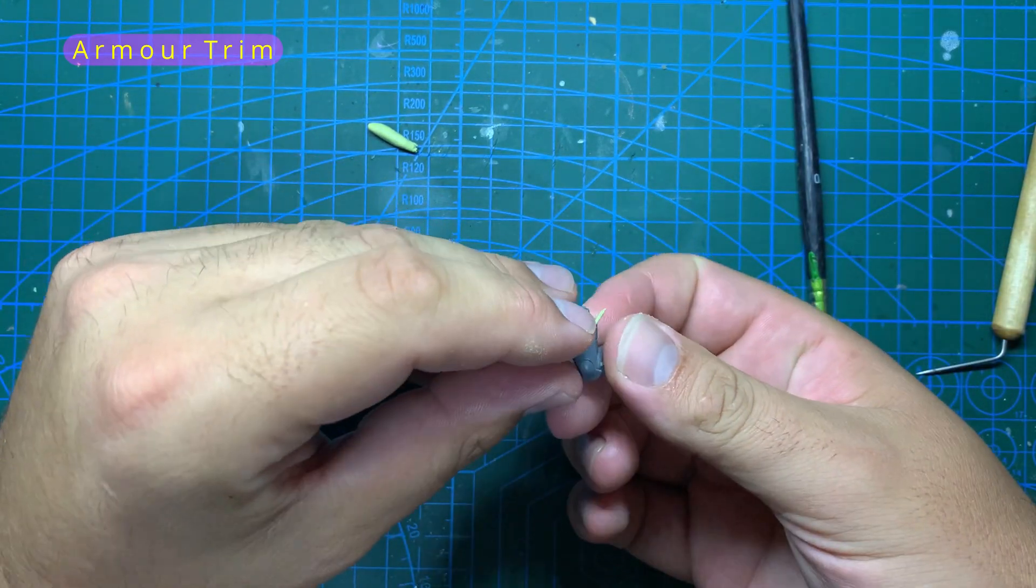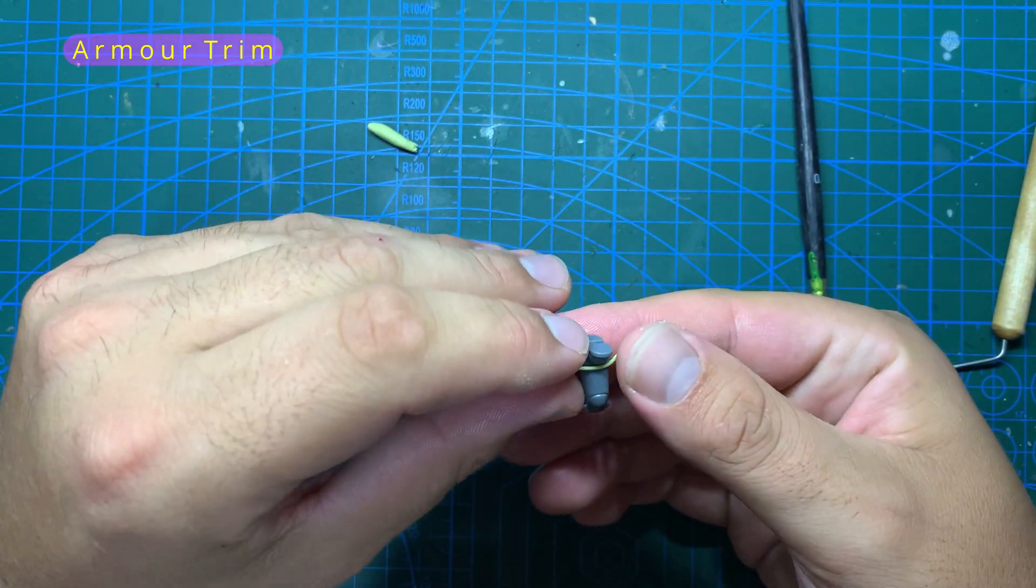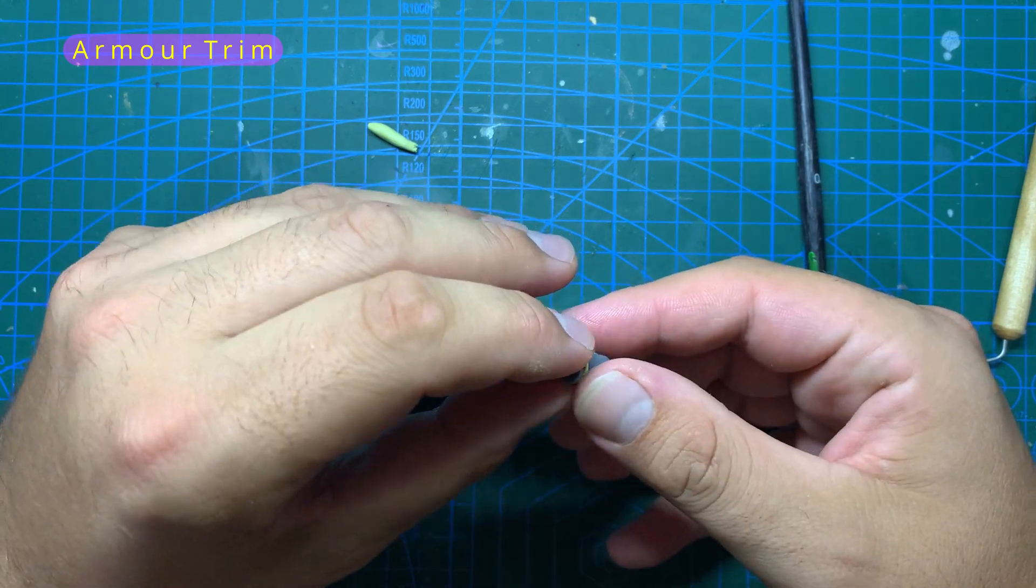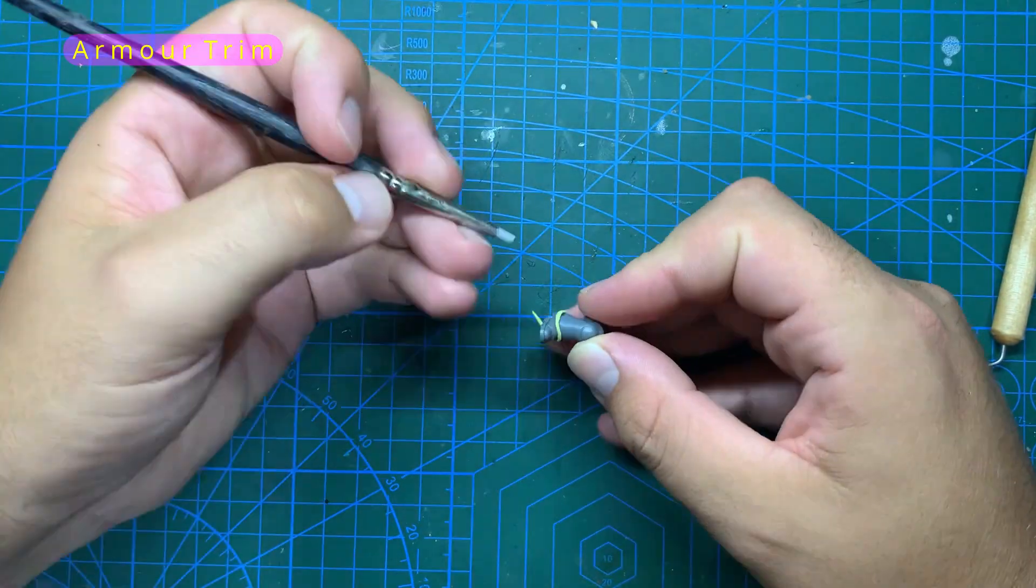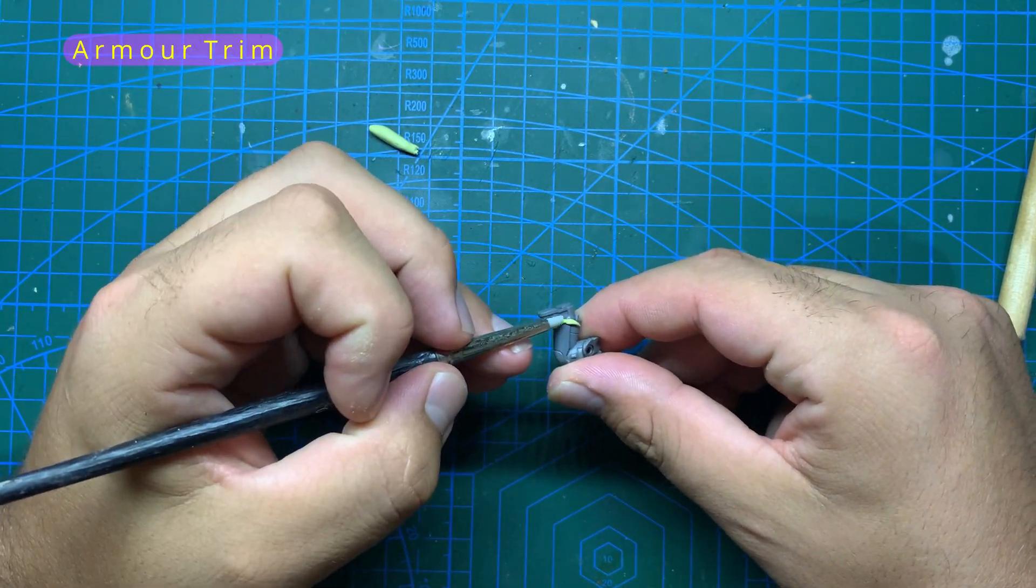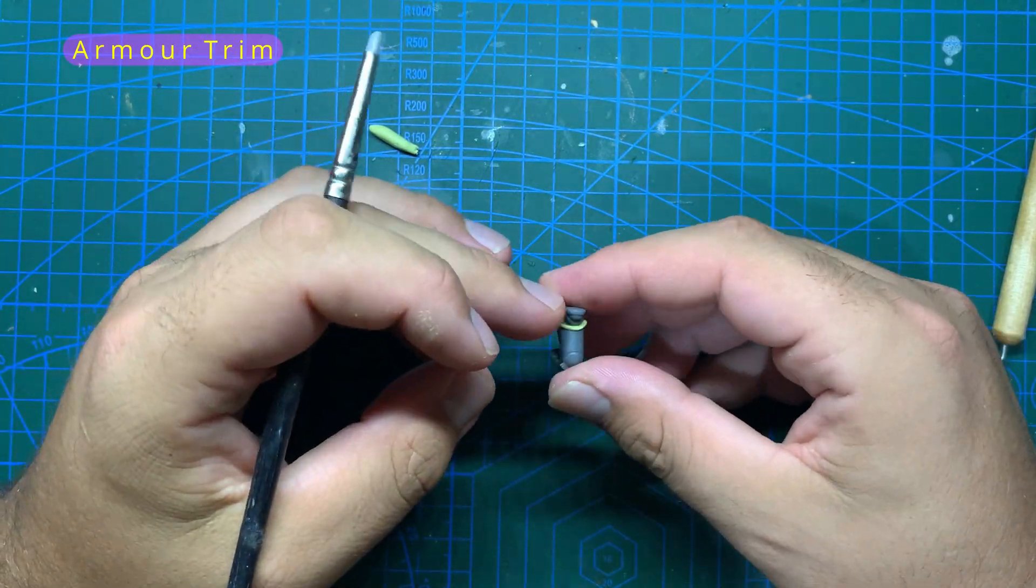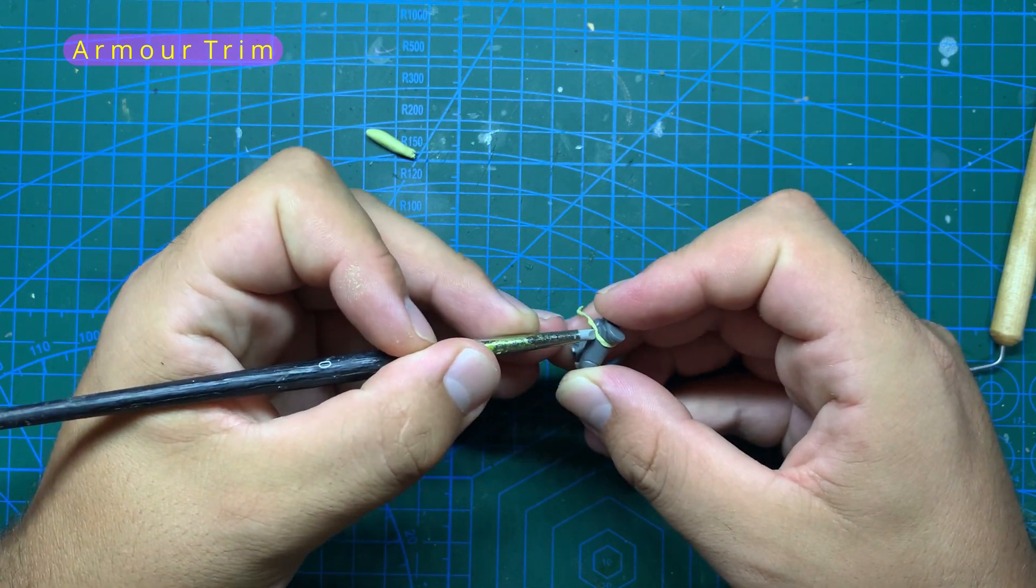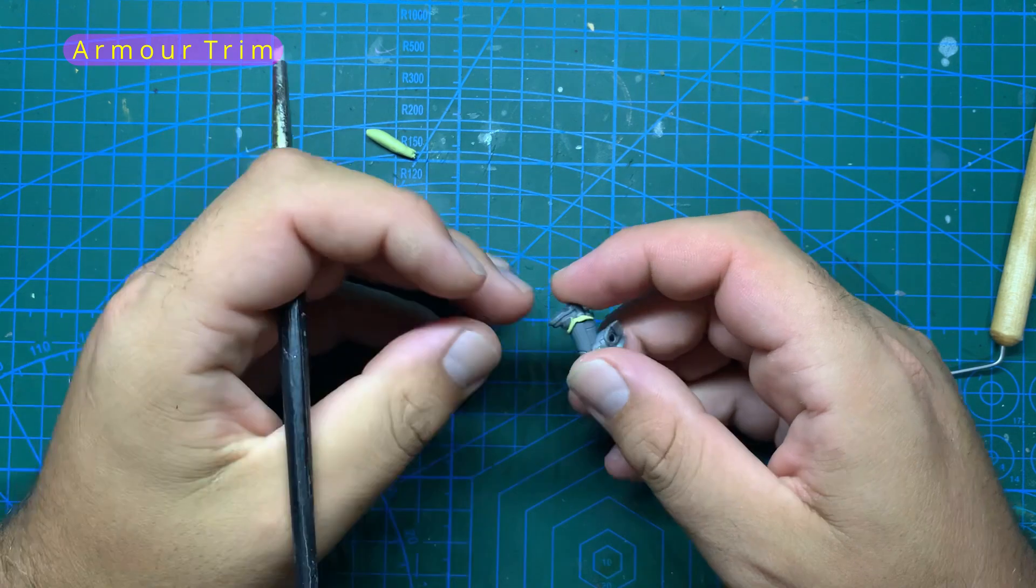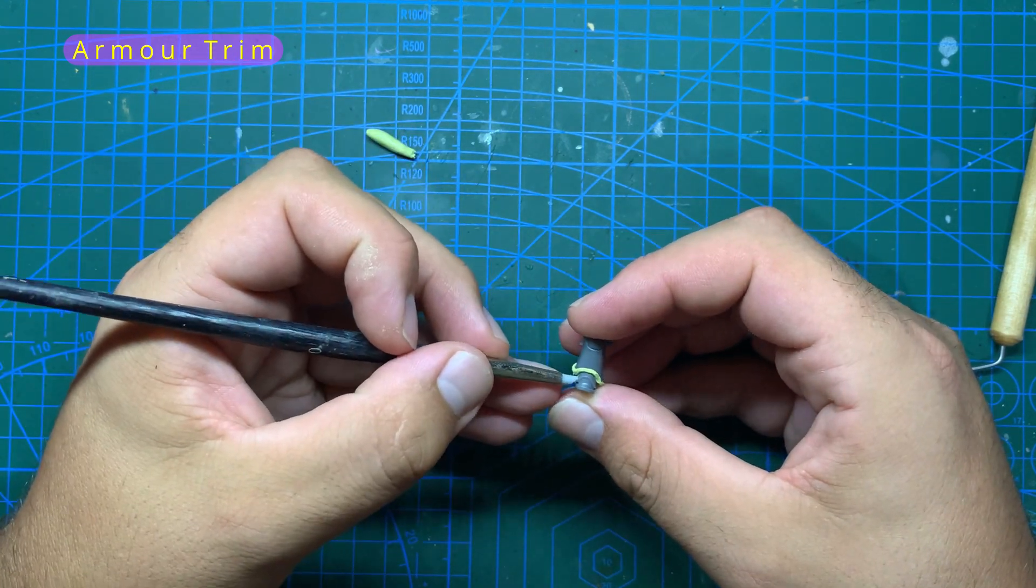To do this trim I'm going to take some epoxy putty, in this case I'm using Milliput, whereas I normally use green stuff, and I'm going to mix the two colors together until they are thoroughly mixed. Then I'm going to roll it out into a very thin sausage. This sausage can then be pressed against the edges of the armor plate, using my tools to poke and prod it into place, trim the ends, and then flatten it out a little so it looks a bit more trimmy and less of a sausage.